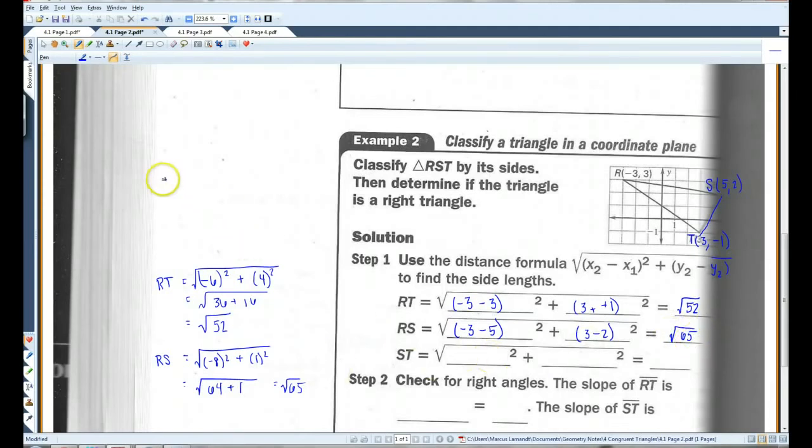All right, and the last one I'm going to put up here because I ran out of room. ST, that's this side here, I've got 5 minus 3 squared, and 2 minus negative 1 squared. Once again, the minus negative becomes a positive. So, 5 minus 3 is 2, 2 plus 1 is 3, so I've got 4 plus 9, which is root 13.